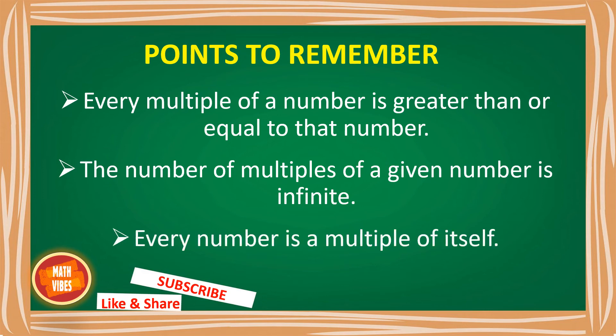And next: every number is a multiple of itself. Just as with factors — every number has 1 and the number itself as factors — here every number is a multiple of itself, because if you multiply it by 1 you get the same number. For example, 11 ones are 11, and 23 ones are 23. So the first multiple is always the number itself. Every number is its own multiple.